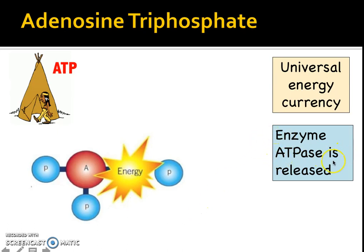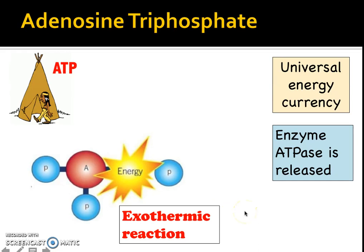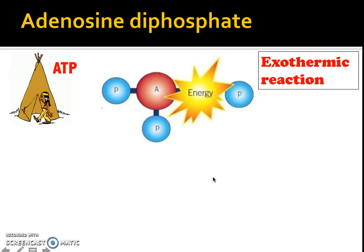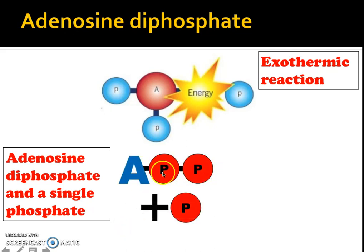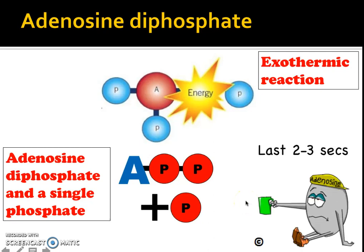The enzyme ATPase stimulates the movement of the phosphate away from the adenosine and the other two phosphates. This exothermic reaction means we no longer have ATP — what we now have is adenosine diphosphate (ADP) and a single phosphate. The problem is this whole process will only sustain energy for about two to three seconds — think of a very short sprint or a couple of really physical contractions — and then we would run out of energy.